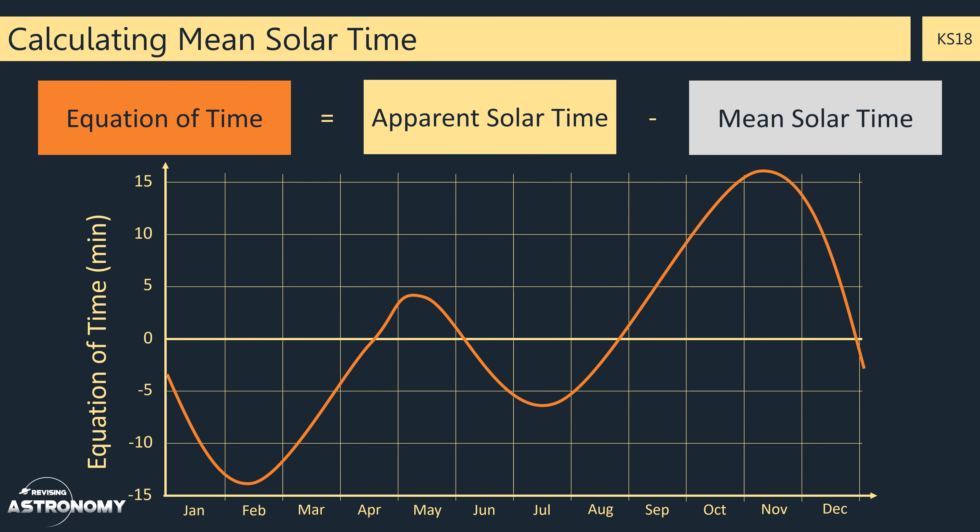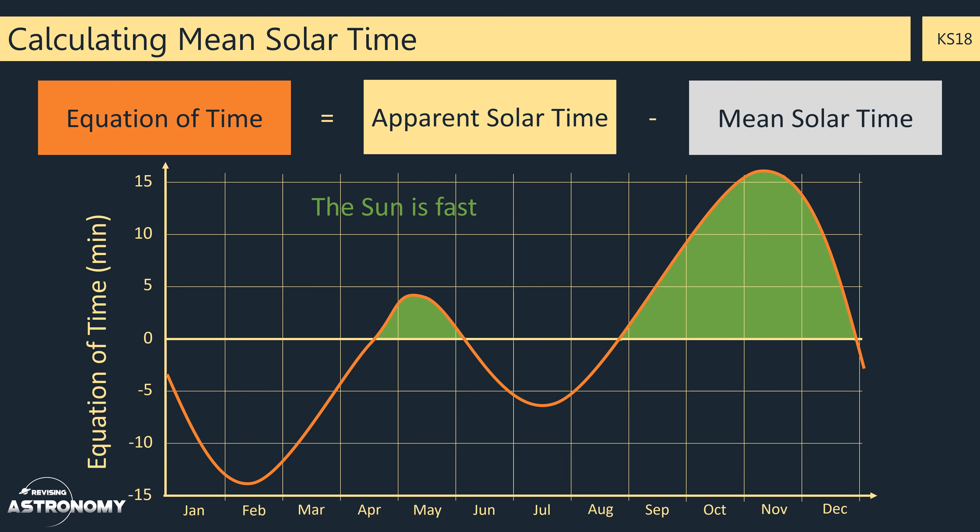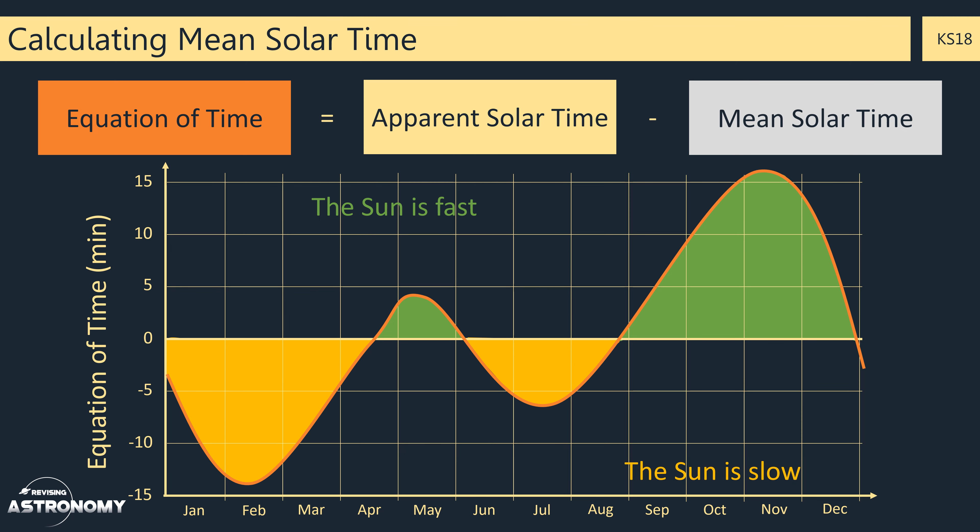Looking at this graph, we can see when the Sun is fast, the locations in green, when the equation of time is positive, and the times when it's slow, those in yellow. And also we can see in red the dates when the equation of time is zero, and it's on these dates that a sundial would tell you exactly the same time as your watch.